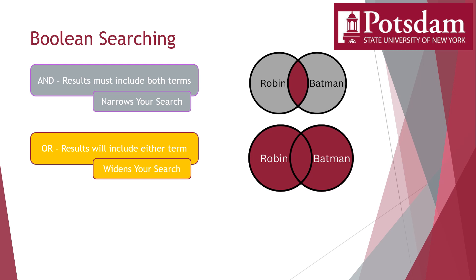You can conduct an OR search when you're not getting enough results. It's often worthwhile to think of synonyms or similar terms to the one you're searching, because what you might be thinking of might not be what someone else called it in an article. For instance, if you search for stress, you could expand your results by searching stress OR anxiety in order to get more returns.